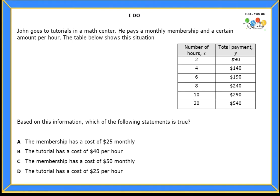So let's read the question. Based on this information, which of the following statements is true? So let's see. What do I know? We know that he pays a monthly membership, but he also pays so much money per hour. Very good.